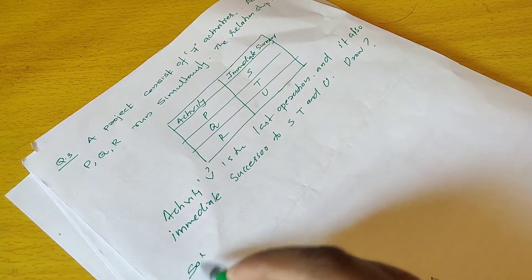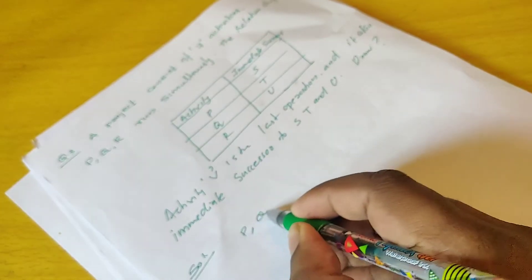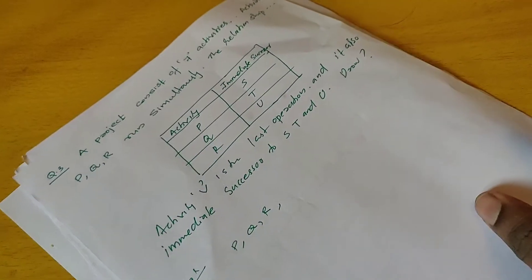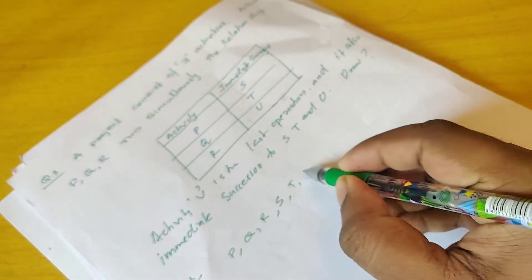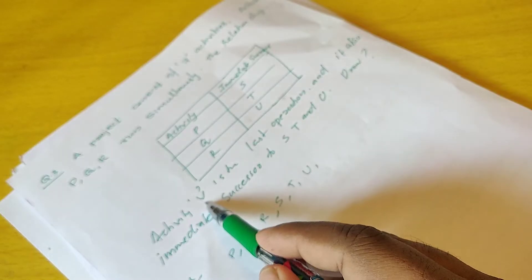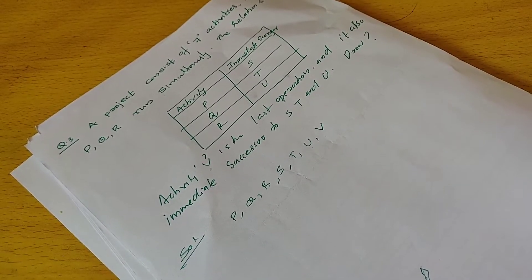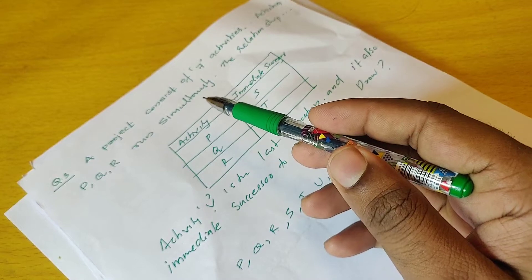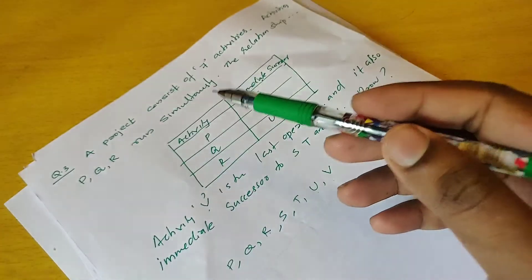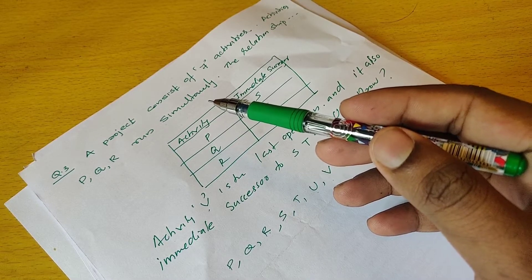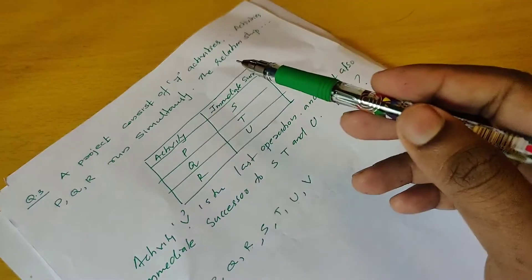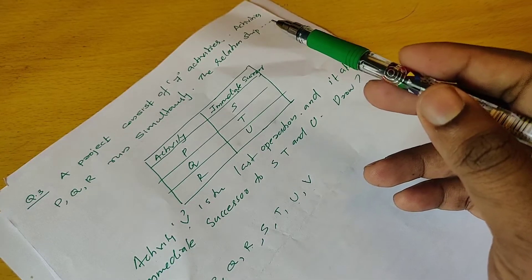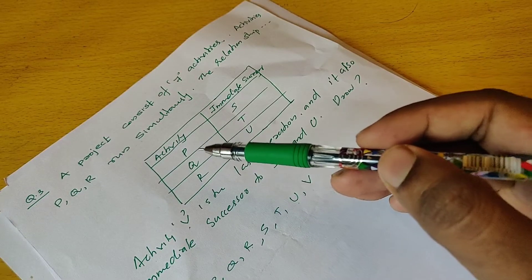Starting with one slack committee point: activities p, q, r are already identified, along with s, p, u. The last activity is v. This project consists of 7 activities. Activities p, q, r run simultaneously. What are the activities? The relationship among various activities is given below — what is the relationship? p, q, r are activities.